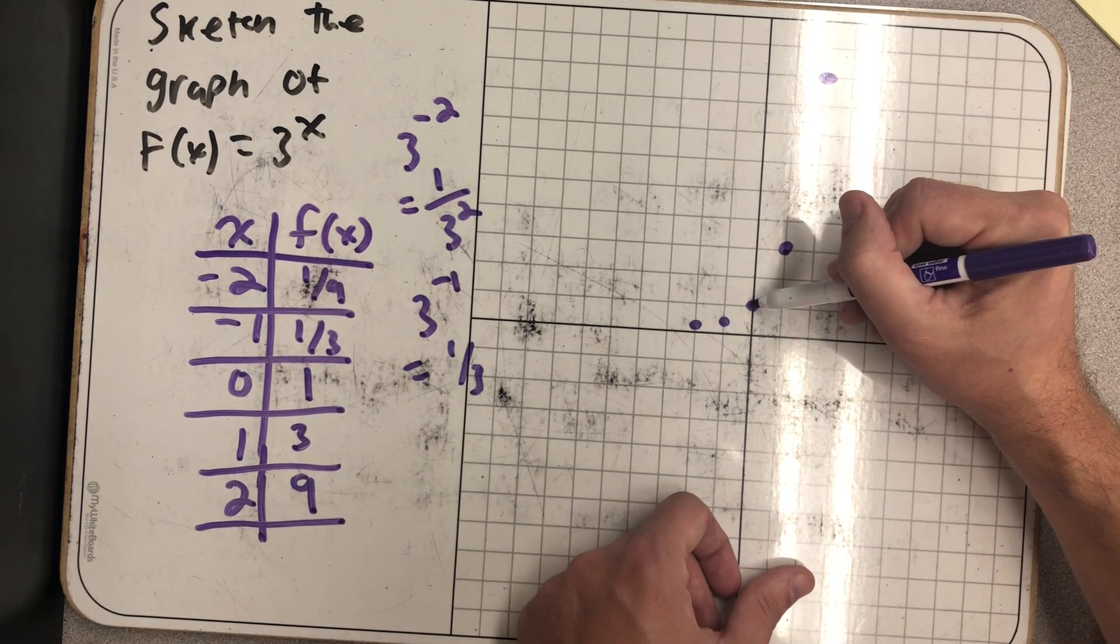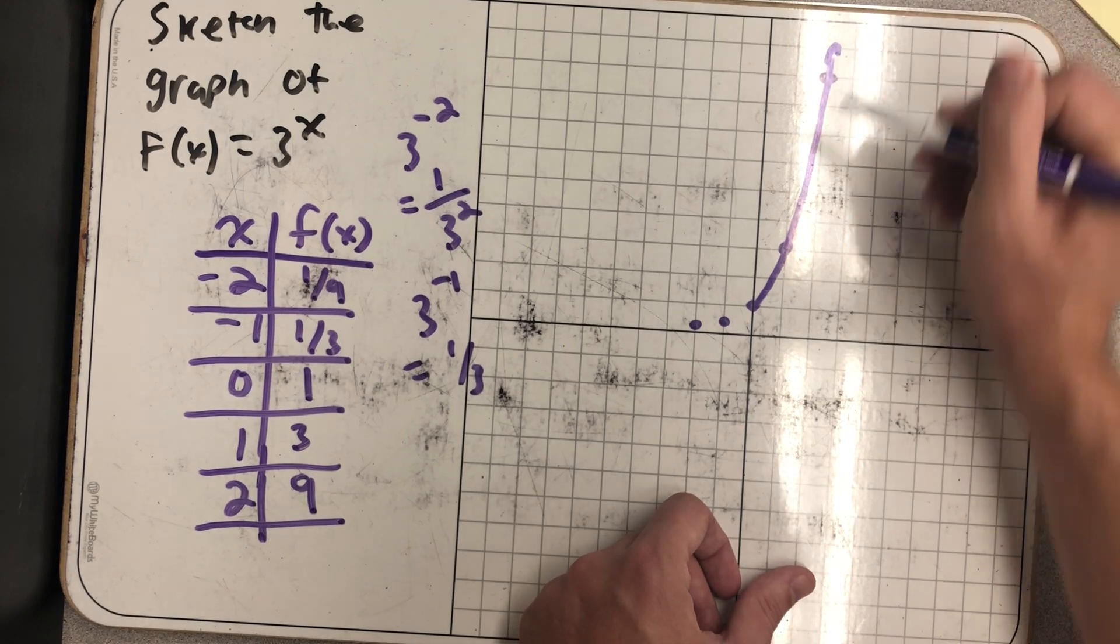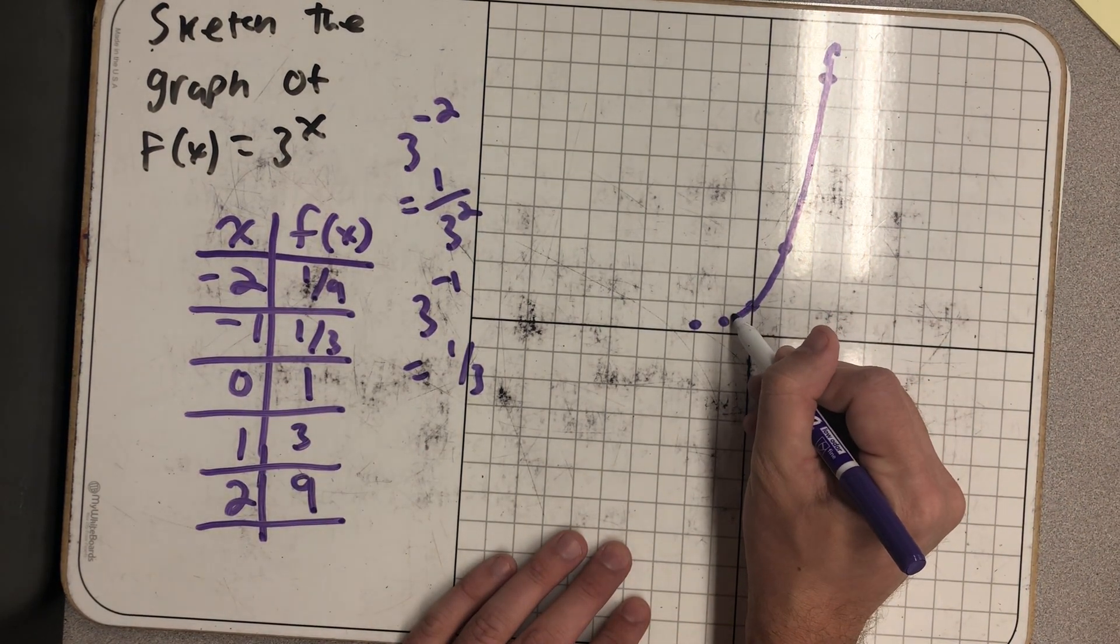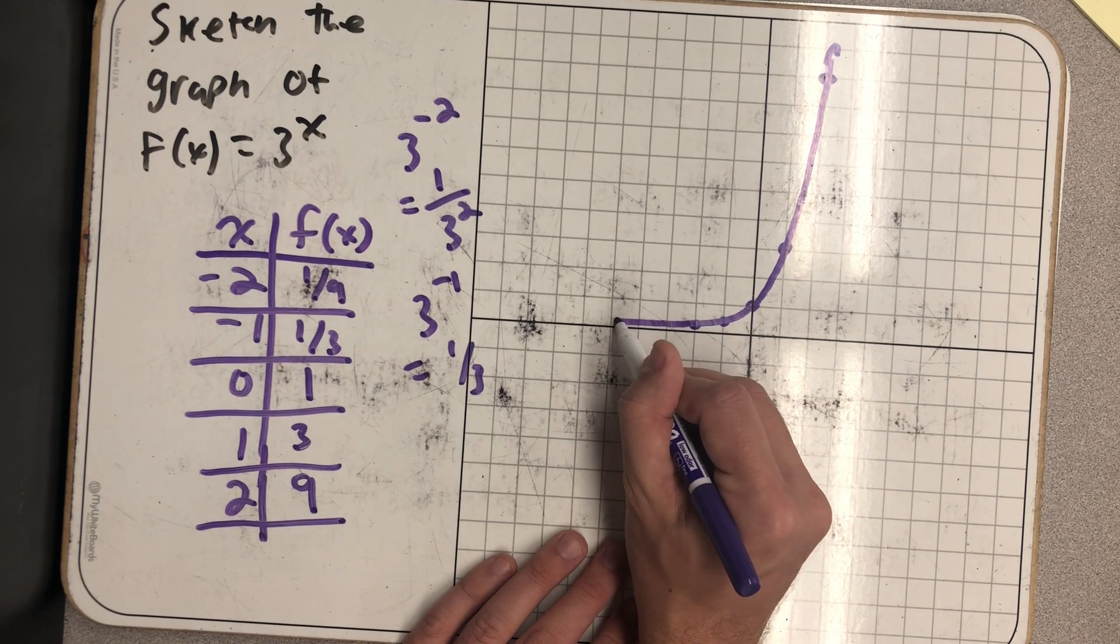And so my graph growing very steeply on this side, and then approaching, or apparently approaching the x-axis on this side.